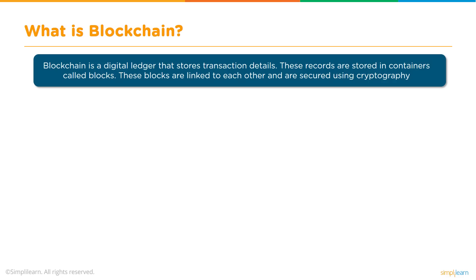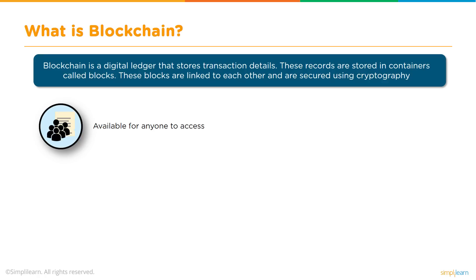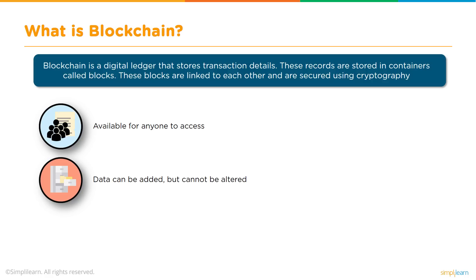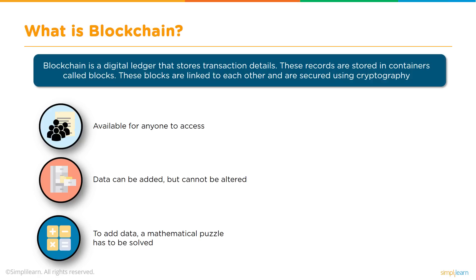What is blockchain? Blockchain is a digital ledger that stores transaction details. These records are stored and aggregated in containers called blocks, which are linked to each other and secured using cryptography. Blockchain is available for anyone to access. Data can only be added — we cannot alter any information which is added to a blockchain, and that is called its immutability feature. To add any data, a typical mathematical puzzle has to be solved by the validators of the network, or so-called miners.